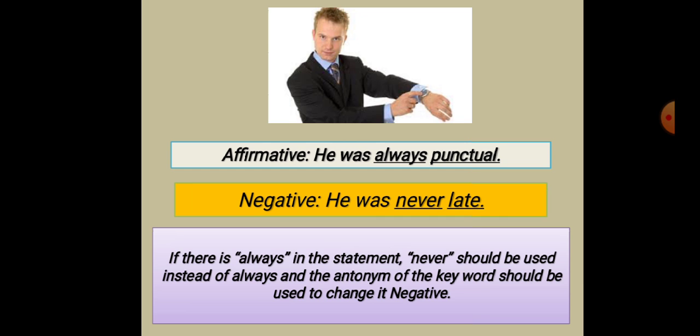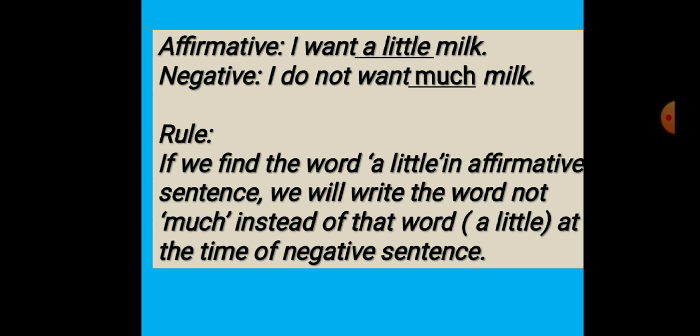Now let's see this one: 'I want a little more.' The negative form is 'I do not want much more.' If we find the word 'a little' in an affirmative sentence, we will write the word 'not much' instead of that word at the time of the negative sentence.